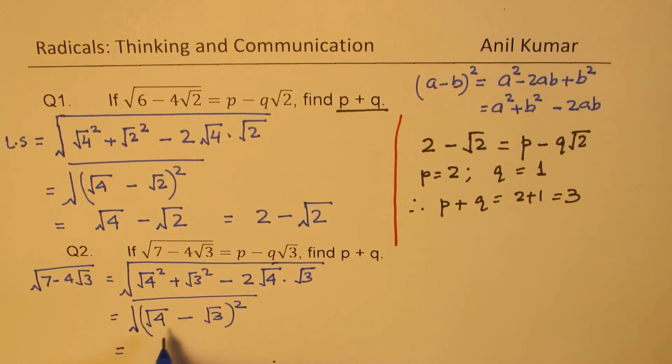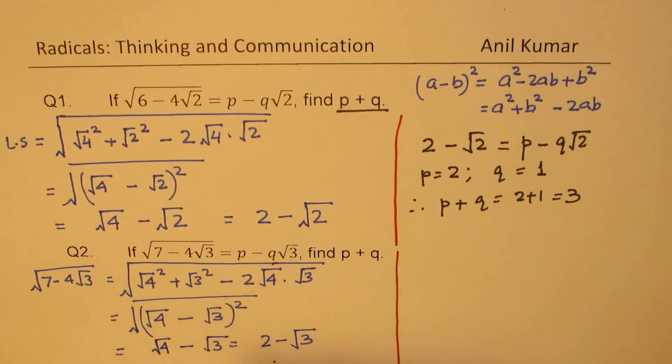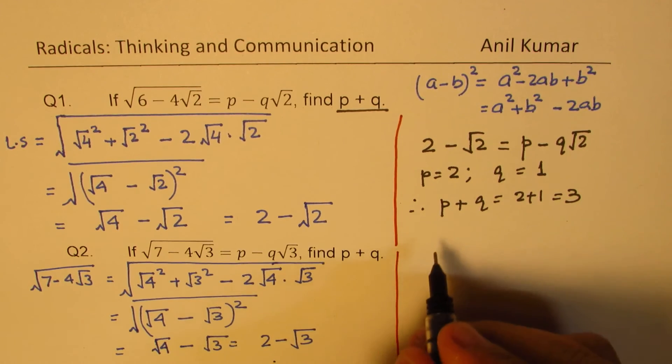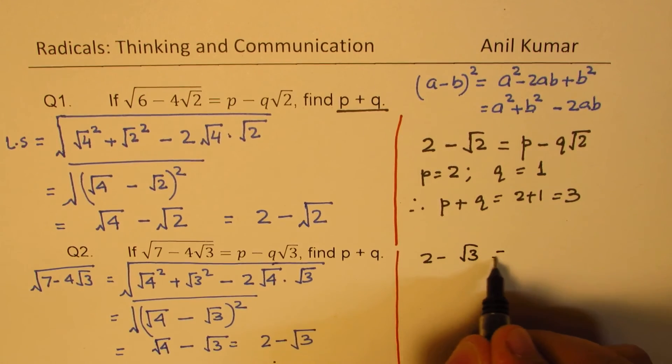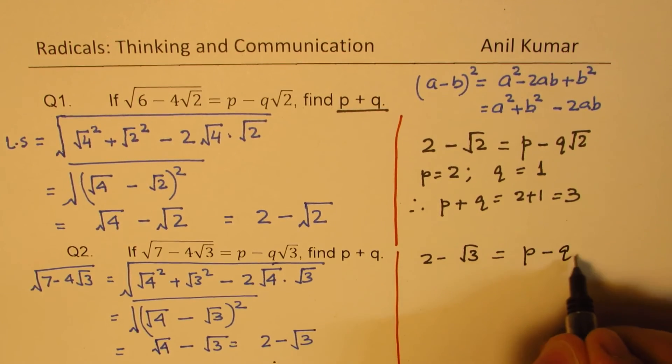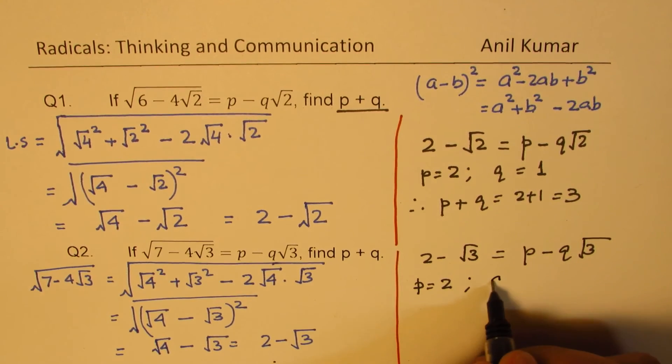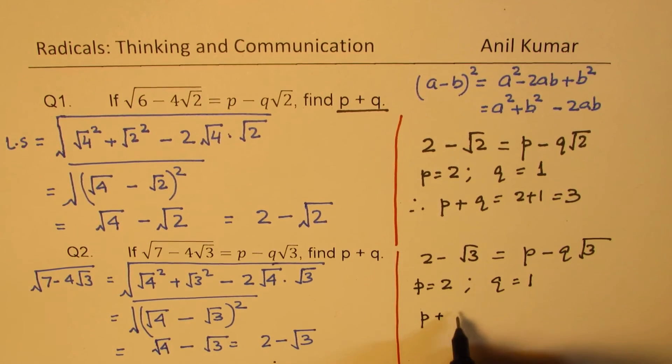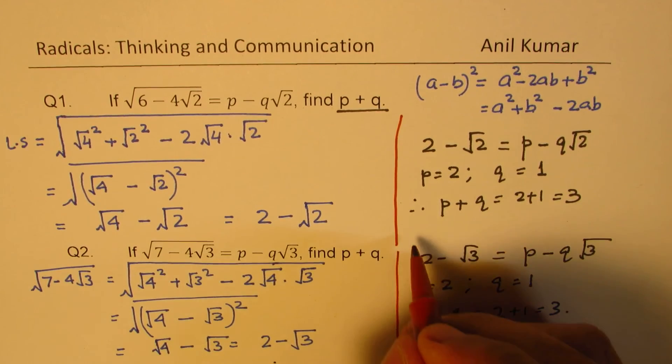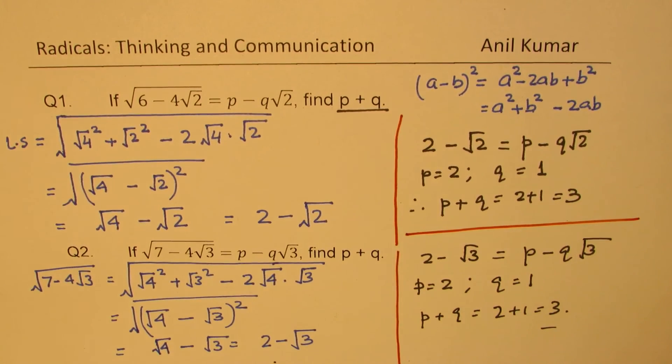Therefore, we could now write this as square root of 4 minus square root of 3. So which is basically 2 minus square root of 3. Okay? Now, we'll again compare with what is given to us. So we are saying that 2 minus square root of 3 is equal to p minus q square root of 3. So in this case, p is equal to 2 and q equals to 1. And their sum p plus q will be equal to 2 plus 1, which is 3. Do you see that? So that is how we are going to solve such questions.